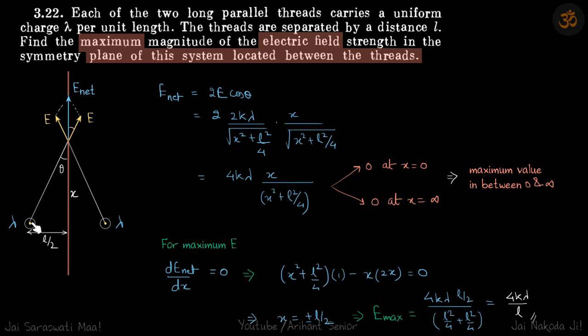We are given two wires going inside the plane in both cases with a uniform linear charge density lambda.